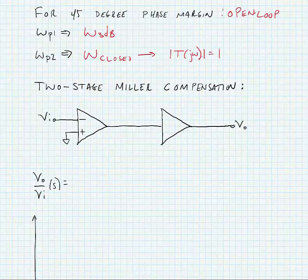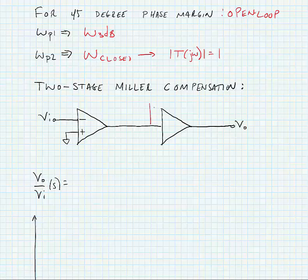What we're going to do is place a compensation capacitor around the inverting gain stage, that is the second stage. We have our initial gain stage, a differential pair a1.